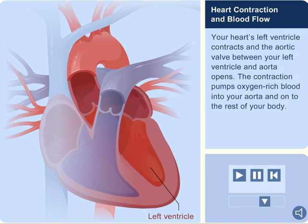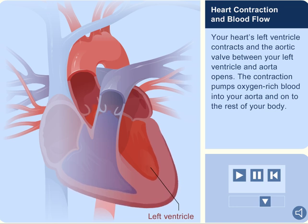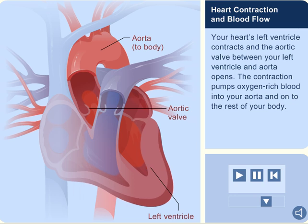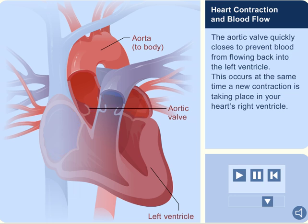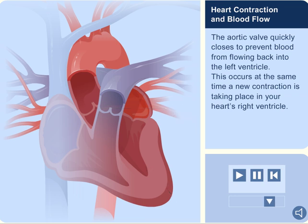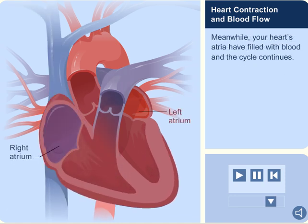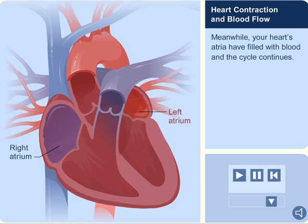Your heart's left ventricle contracts and the aortic valve between your left ventricle and aorta opens. The contraction pumps oxygen-rich blood into your aorta and onto the rest of your body. The aortic valve quickly closes to prevent blood from flowing back into the left ventricle. This occurs at the same time a new contraction is taking place in your heart's right ventricle. Meanwhile, your heart's atria have filled with blood and the cycle continues.